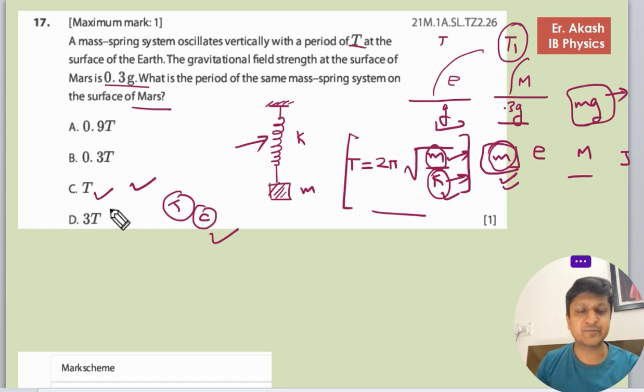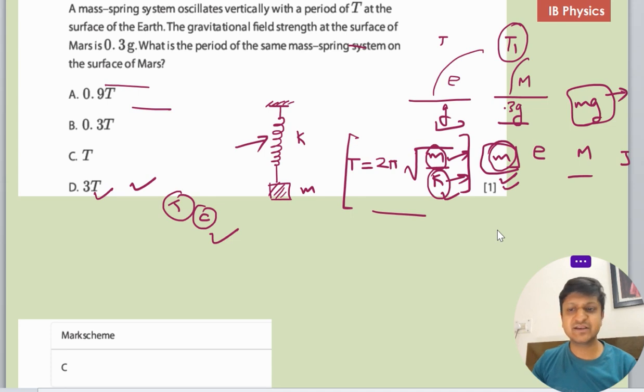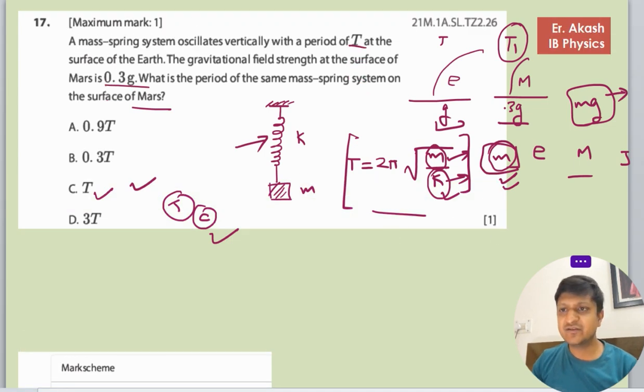So now we will check the mark scheme. Mark scheme says C is the right answer. In this question it's a little tricky question because everybody thinks like that if there is gravitational change so there will be change in the time period. But this time period does not depend on the gravitational force so there wouldn't be any change. So do not get confused with that. So thank you for watching this video.